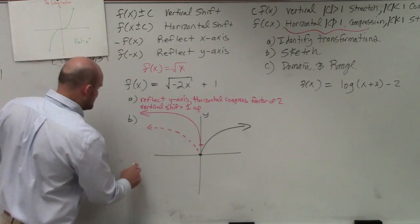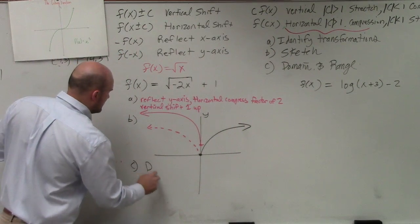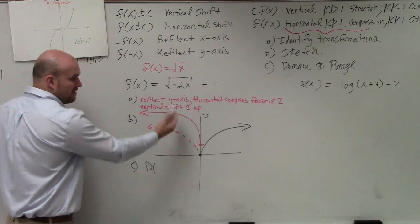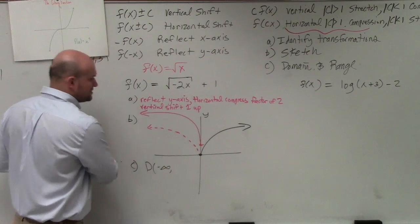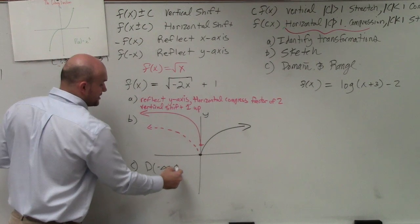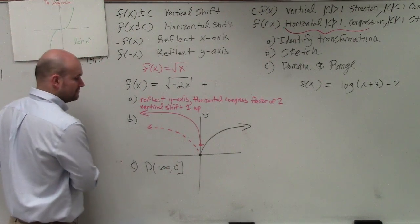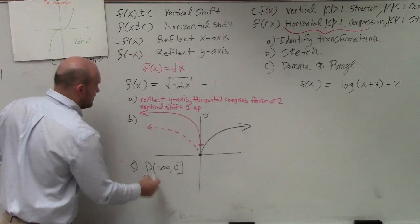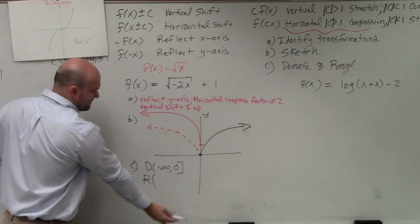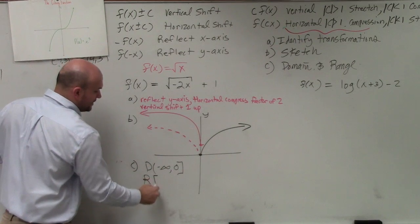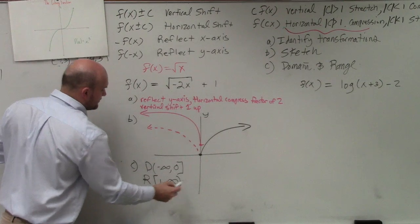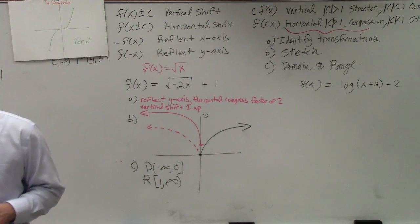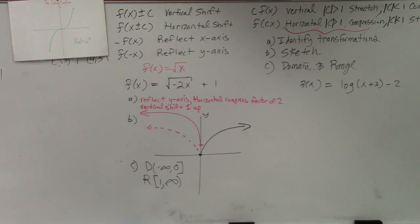The last thing we need to do is domain and range. For domain, I look at this graph — how far to the left is it going? Negative infinity. How far to the right? Zero, and zero is included. For range: how low is the graph going? One, which is included. And it goes all the way up to infinity. This three-part question would be a very good one to give on a quiz.